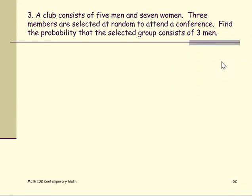For this problem, a club consists of five men and seven women. Three members are selected at random to attend a conference. Find the probability that the selected group consists of three men.